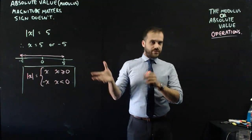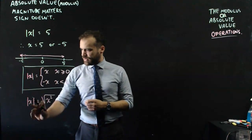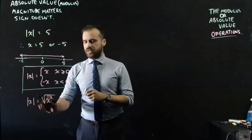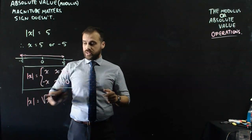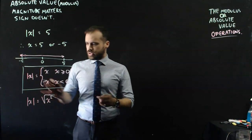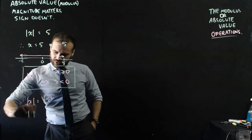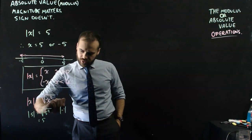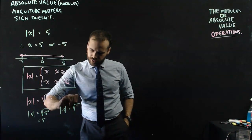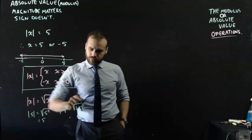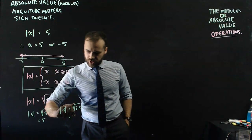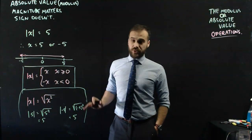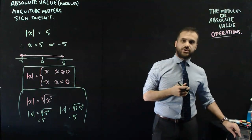There is one more way to define the absolute value: the absolute value of x is equal to the square root of x squared. You might think there's going to be a plus-minus out the front, but if we do a square root without a plus-minus, it only means take the positive solution. This works because the absolute value of 5 equals the square root of 5 squared, which is 5. The absolute value of negative 5 equals the square root of negative 5 squared, which is the square root of 25, which is also 5. Now we're just talking about definitions of absolute value — magnitude matters, sign doesn't. Let's do some operations.